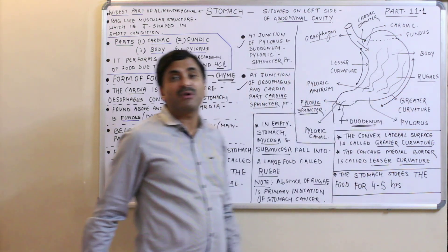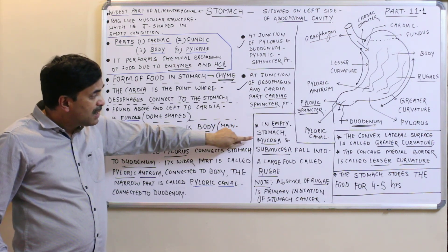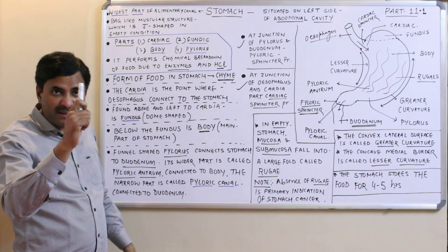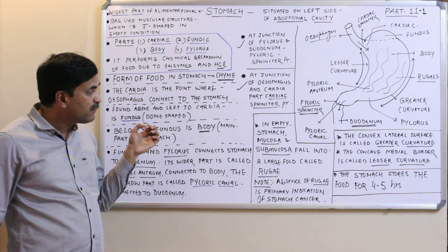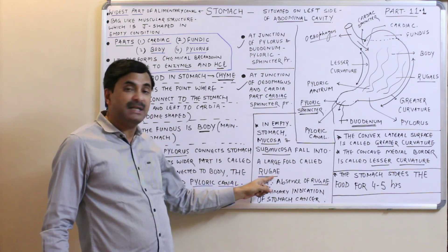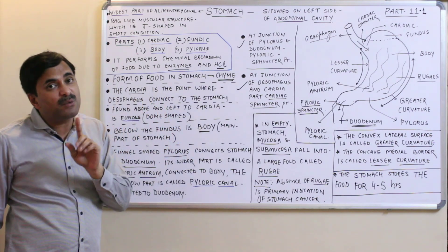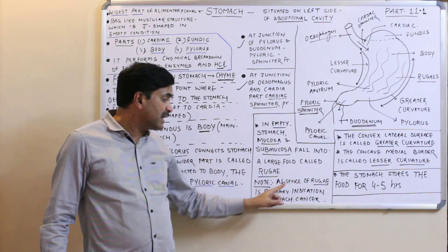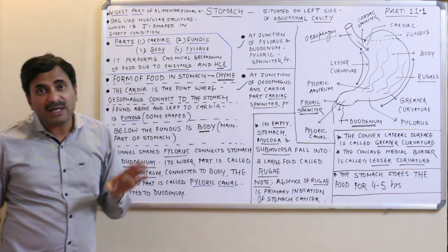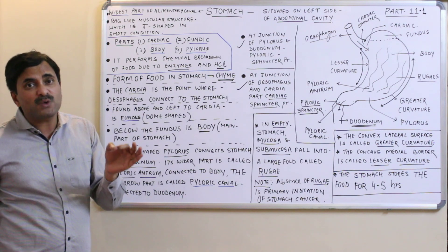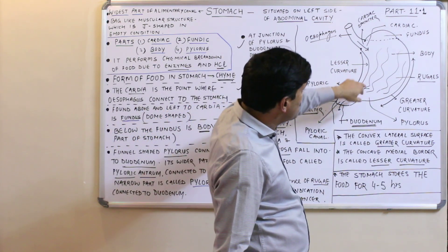The folds visible in the stomach are called rugae. Rugae are found only in the empty stomach. In an empty stomach, the mucosa and submucosa fall into large folds called rugae. The absence of rugae is the primary indication of stomach cancer, because in people suffering from stomach cancer, these folds of mucosa and submucosa are totally absent.